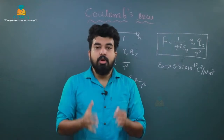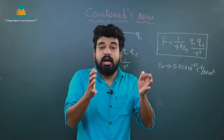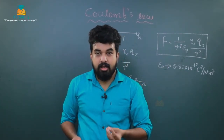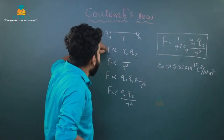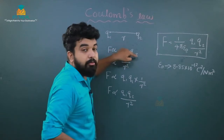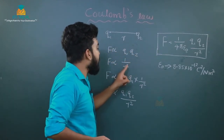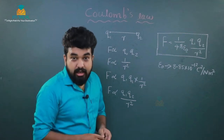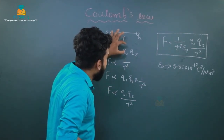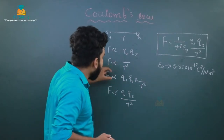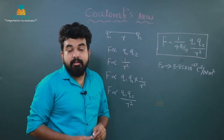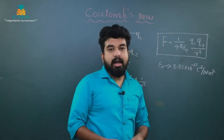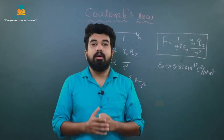Coulomb's Law states that the electrostatic force of attraction or repulsion between two stationary point charges is directly proportional to the product of the magnitude of the charges and inversely proportional to the square of the distance between them. The equation is F equals 1 by 4 pi epsilon 0 into q1 q2 divided by r square. Thank you.